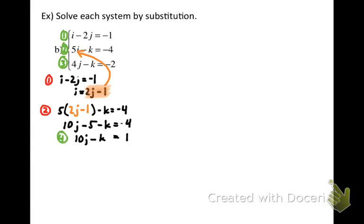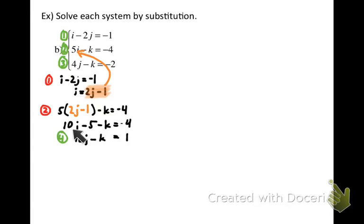There are no like terms to combine on the left side of the equation, but I'll cancel off the constants by adding 5 to both sides, giving negative 4 plus 5 equals 1 on the right, and 10j minus k on the left. That will be equation 4 — I've successfully created another two-variable equation. Now here's where you're not going to be able to follow my advice directly: there is no i in the third equation, so there's nowhere to substitute. But that's actually a good situation — when we substituted for i in the second equation, that gave us an equation with j's and k's, and the third equation already is an equation with just j's and k's.